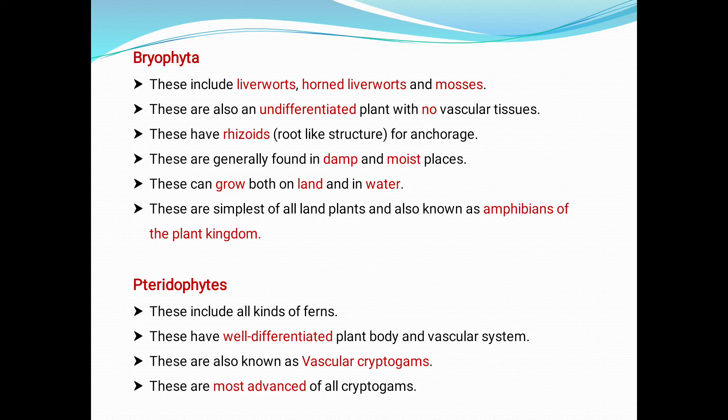Third, Pteridophyta — these include all kinds of ferns. These have a well-differentiated plant body and vascular system. Compared to thallophytes and bryophytes, pteridophytes are more advanced because xylem and phloem are present. They are also known as vascular cryptogams and are the most advanced of all cryptogams.